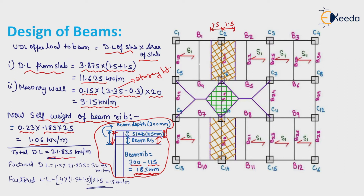Factored dead load equals 1.5 × 21.835 = 32.75 kN per meter. Factored live load equals 4 × (1.5 + 1.5) × 1.5 = 18 kN per meter.